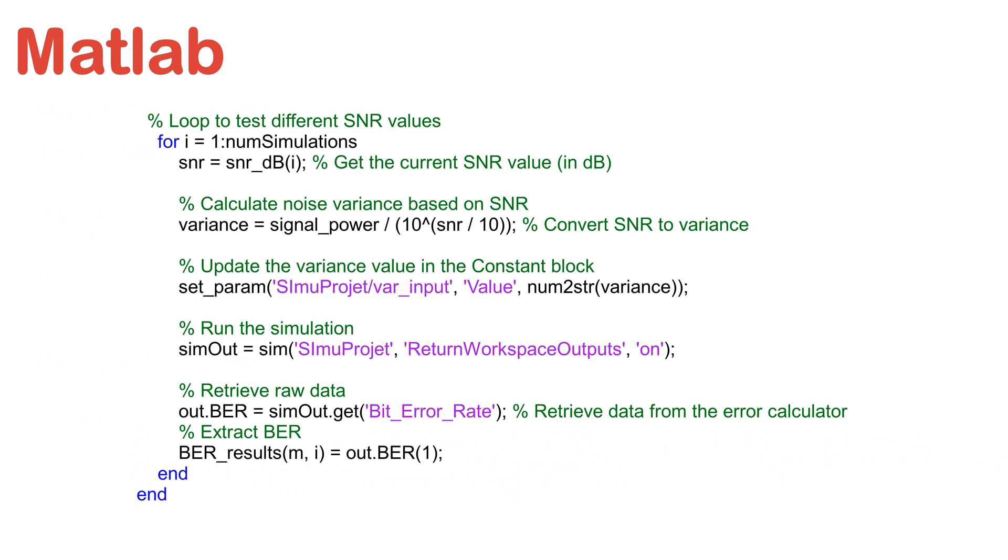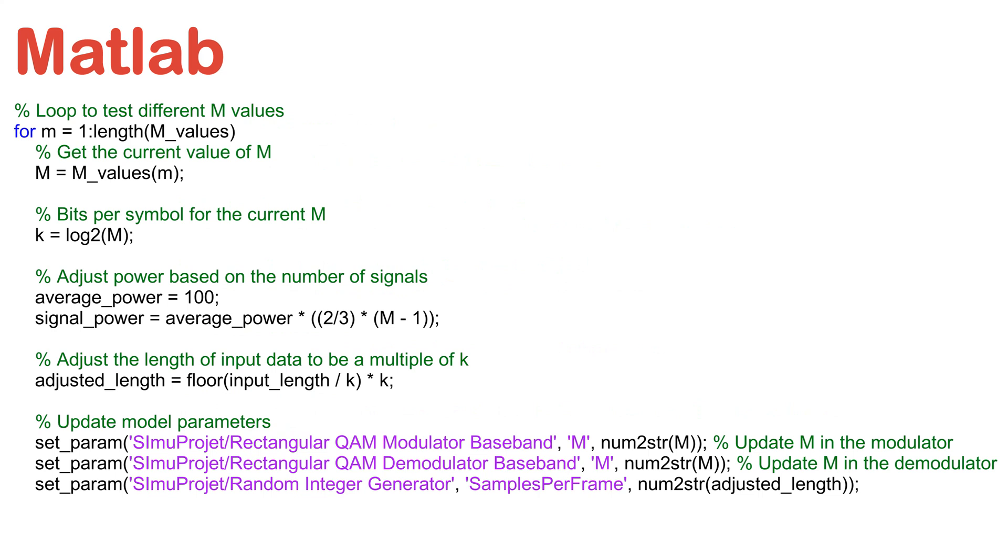The second loop varies the SNR values and calculates the corresponding noise variance. The setParam function updates the Simulink model with the new values of M, the noise variance, and the data size.